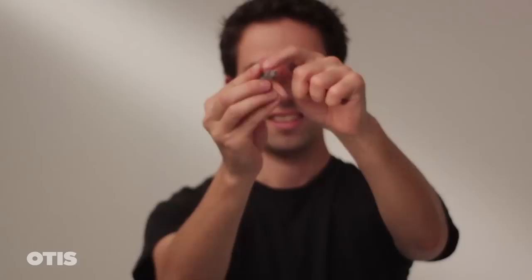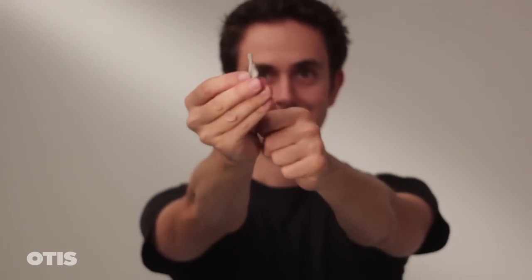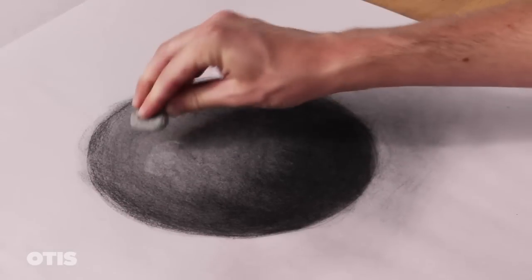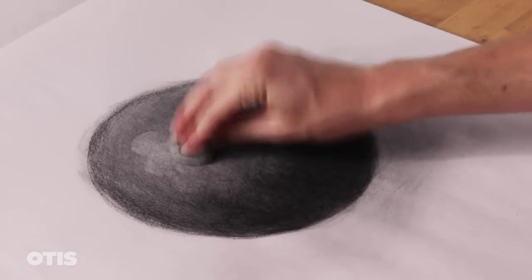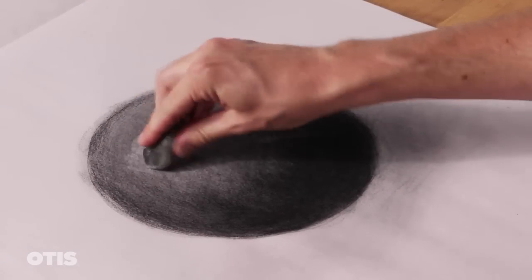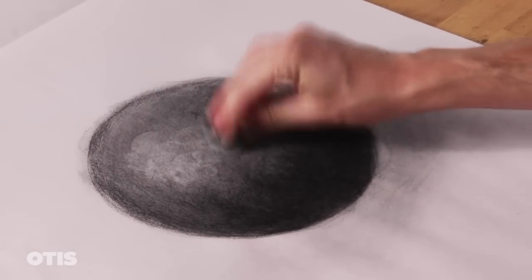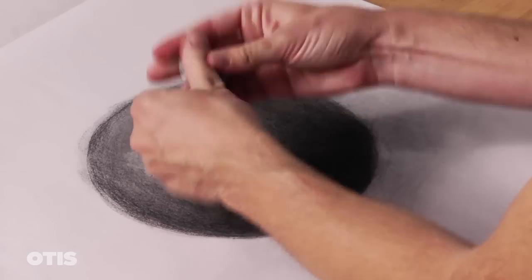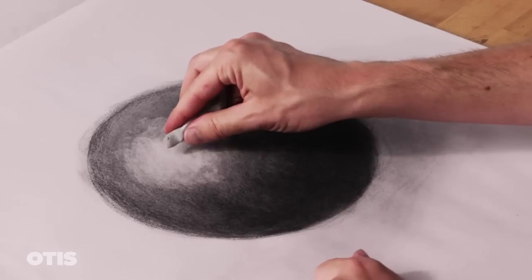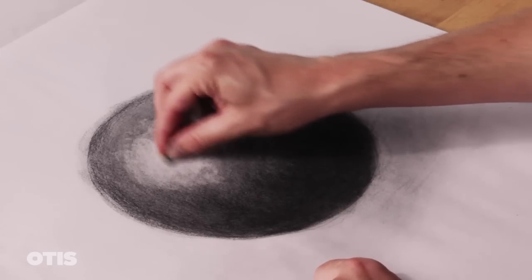Kneaded erasers are usually rubbery and gray in color. They can be used on both graphite and charcoal. When used in a dabbing method, they can lighten a mark without erasing it completely or damaging the paper. When they are dirty, you can clean them simply by stretching and kneading them. They can be formed into any size you need, can be reused extensively, and don't leave piles of eraser dust.